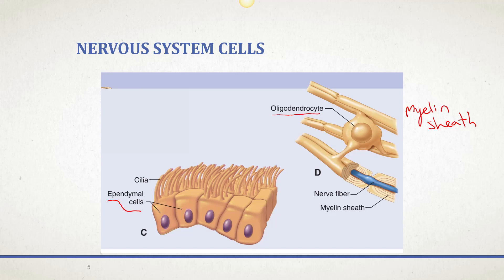That leads to things like multiple sclerosis. If you've heard of MS before, multiple sclerosis is the damage or deterioration of these oligodendrocytes, which leads to slowed nerve impulses. So oligodendrocytes make up the myelin sheath of the central nervous system.